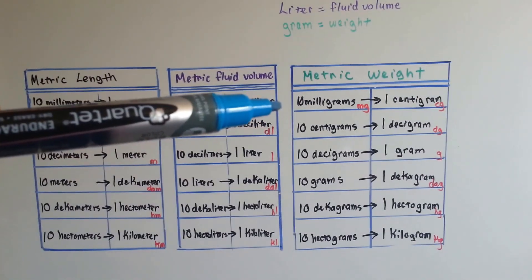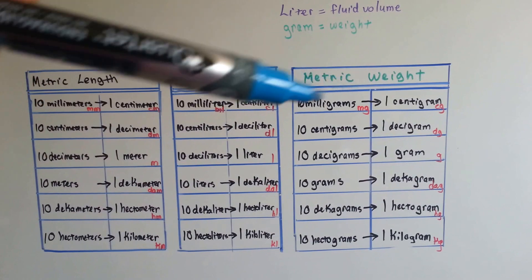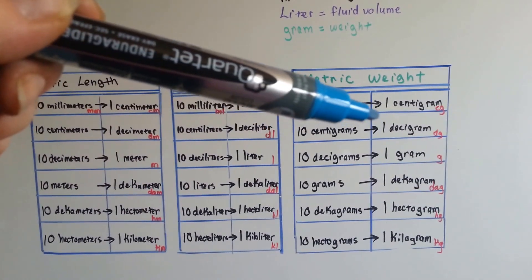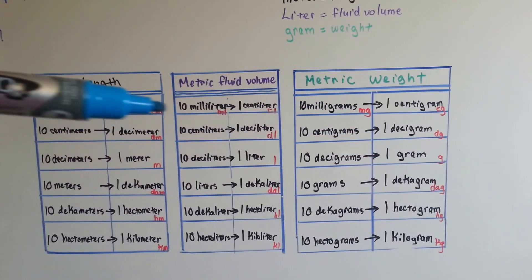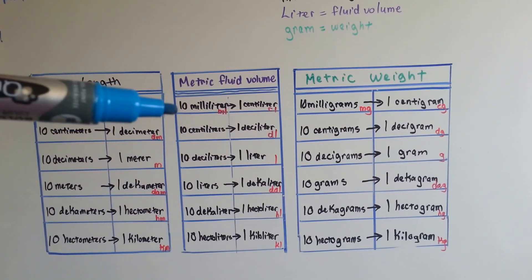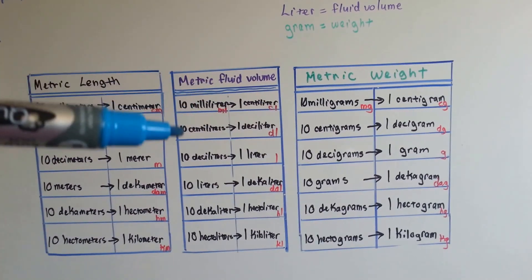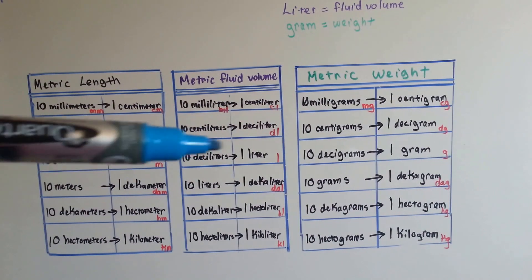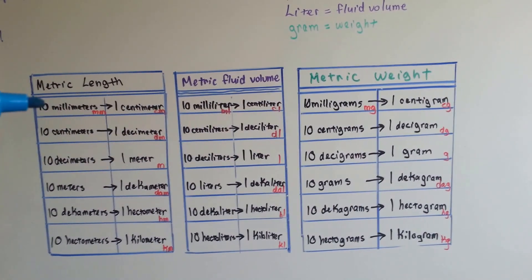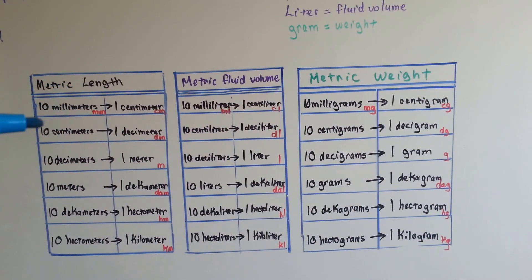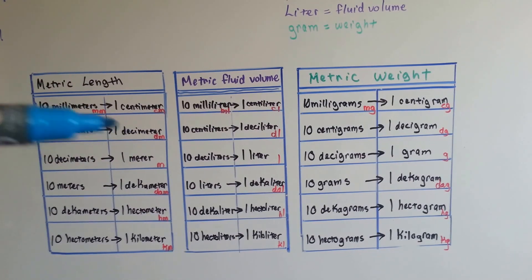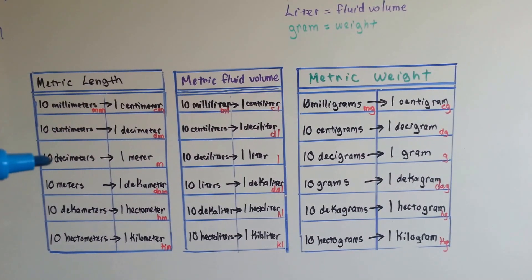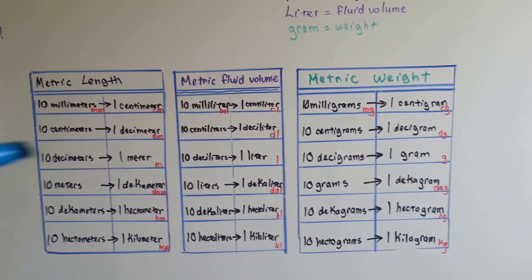Ten of these milligrams is a centigram. Ten centigrams is a decigram. Ten decigrams is a gram. Same thing for the fluid and length. Ten milli is a centi, ten centi is a deci, ten deci is a liter. Ten millimeters is a centi, ten centi is a deci, ten decimeters is a meter, all based on ten.